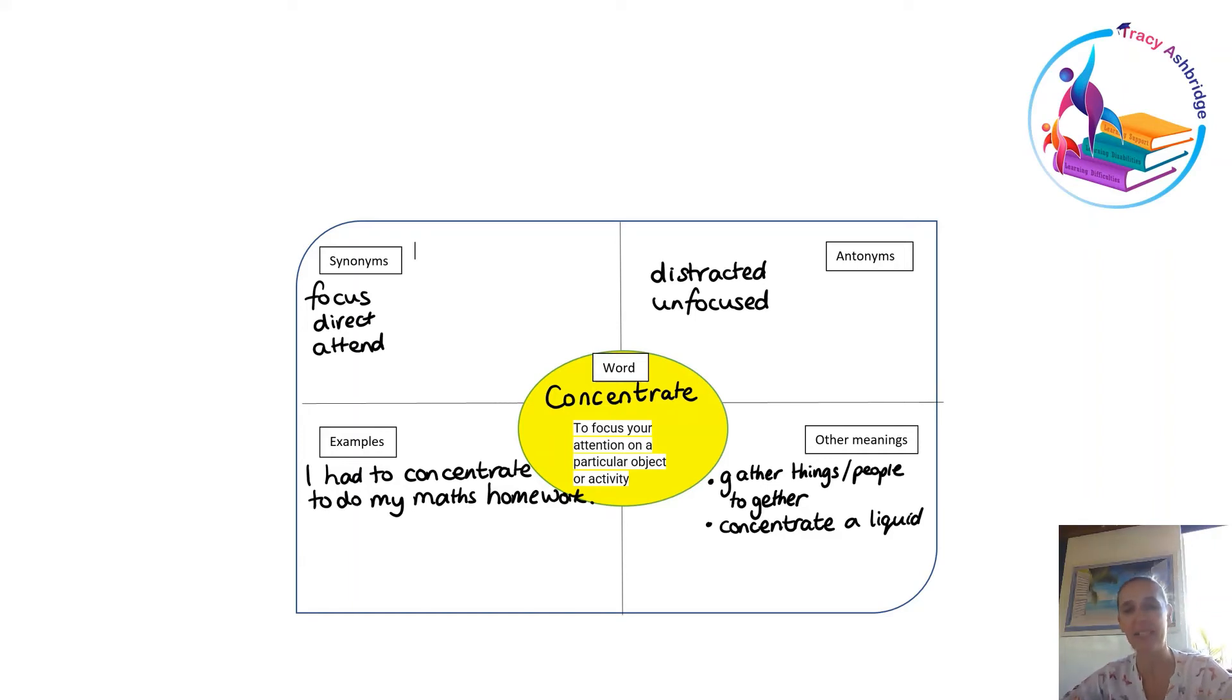However, there are other meanings. We could concentrate people together, we could concentrate a liquid. How many children know when they look at the back of a juice bottle and it says it's made from concentrate, what does that actually mean? Because if you actually try and make it out of thinking really hard, that's not going to work in this context. Students need to think about other meanings of words. This is where going to a dictionary is really useful.